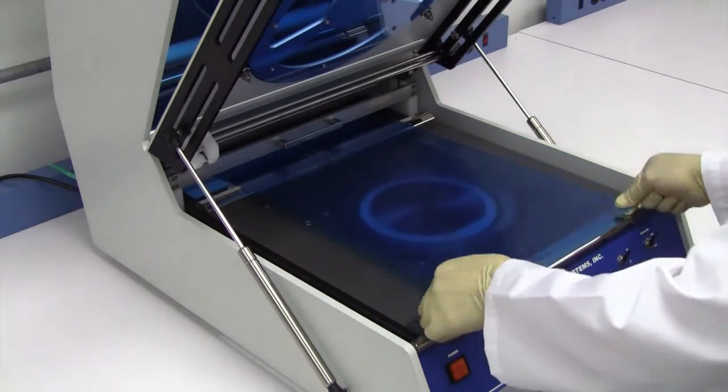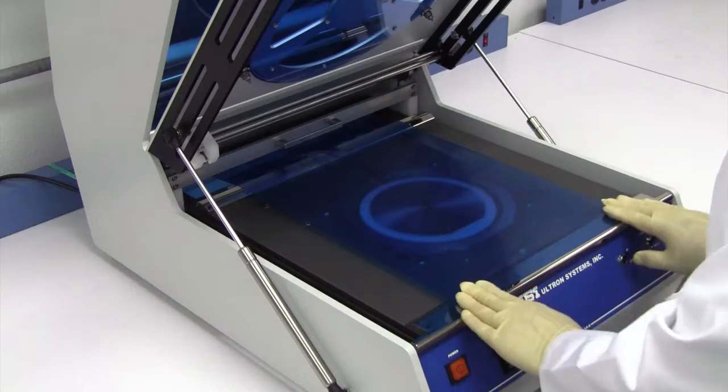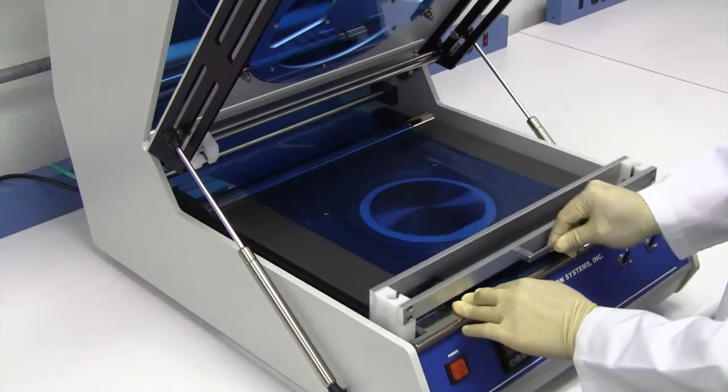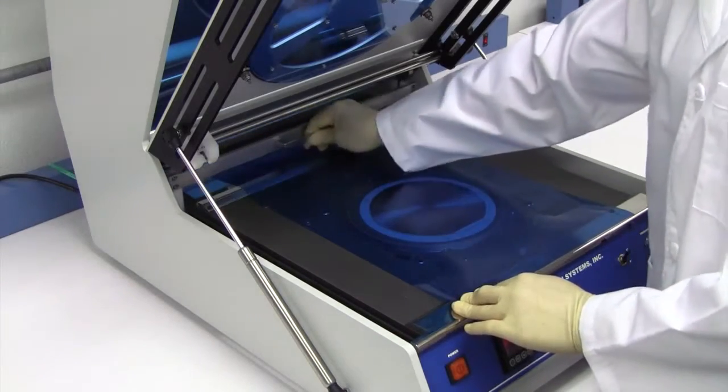Pull the film evenly over the wafer and film frame and attach it to the front tension bar. Next, pull the laminate roller assembly completely forward and return it to its home position.